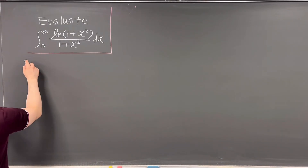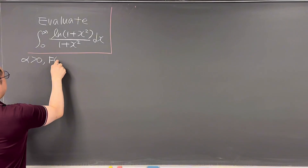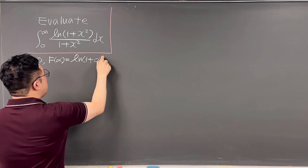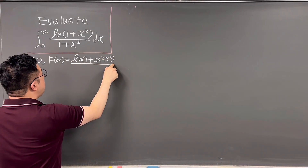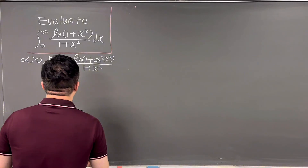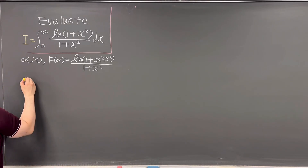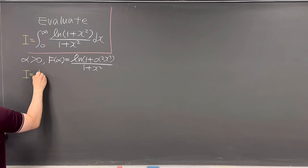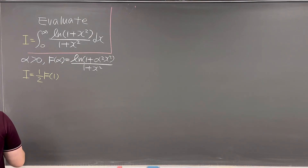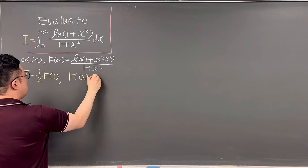Let me parametrize this. Consider alpha greater than 0. Define f(alpha) as the integral from 0 to infinity of ln(1 + alpha²x²) over (1 + x²) dx. If we consider the integral from negative infinity to infinity, then our target integral i equals (1/2) times f(1), using evenness. Also note that f(0) = 0.